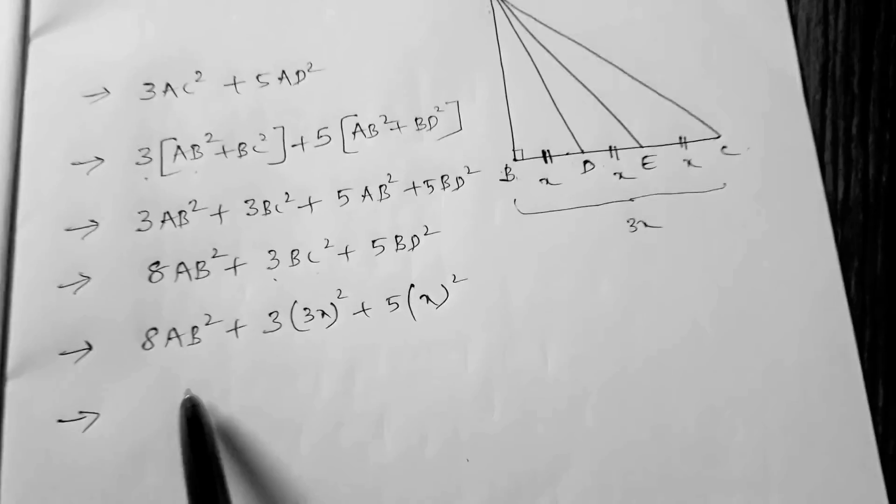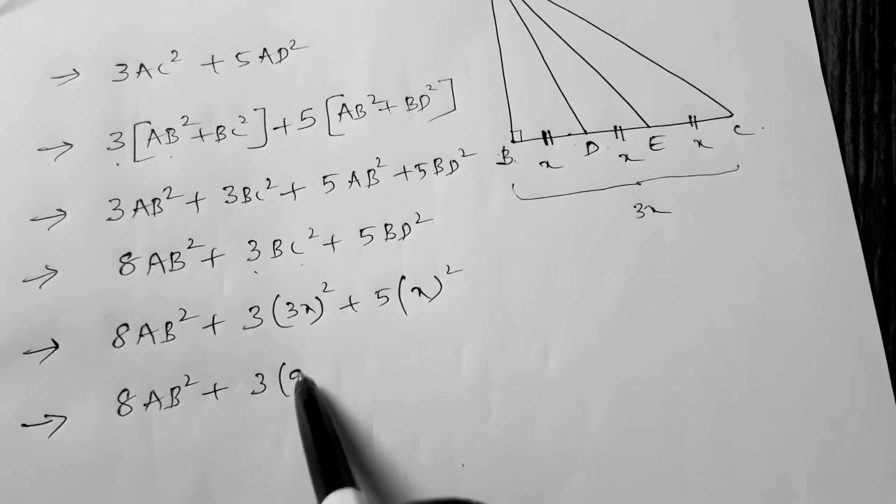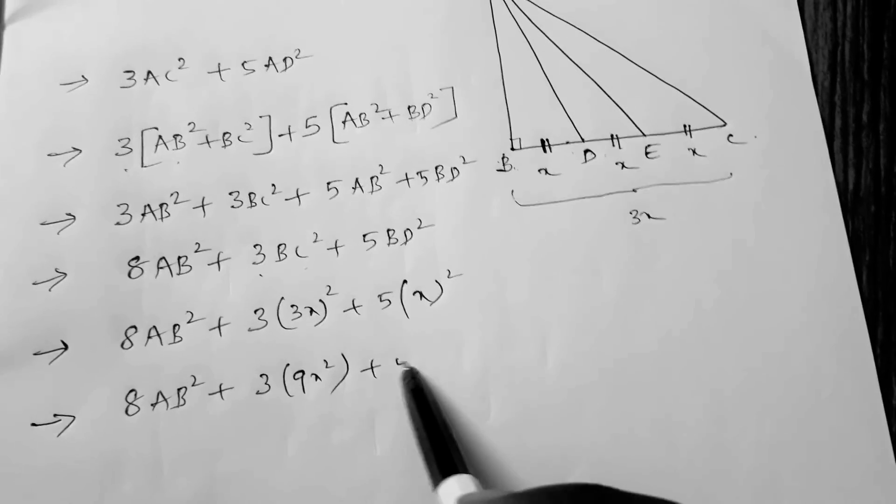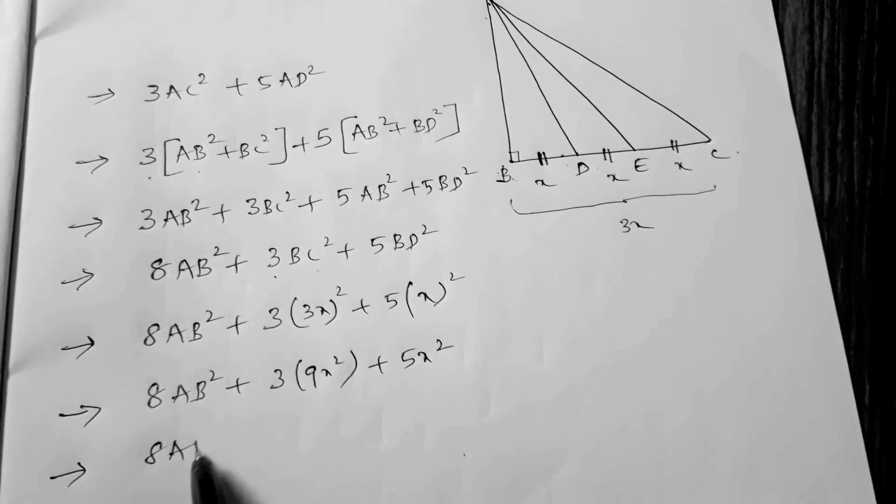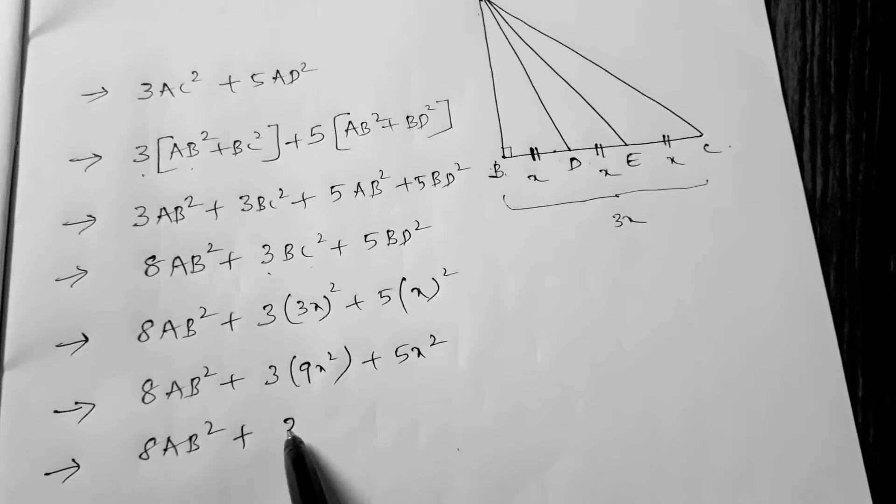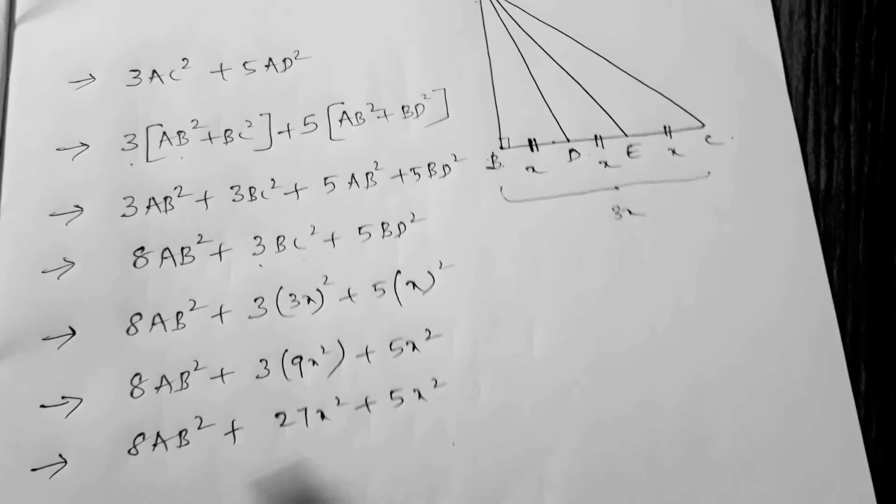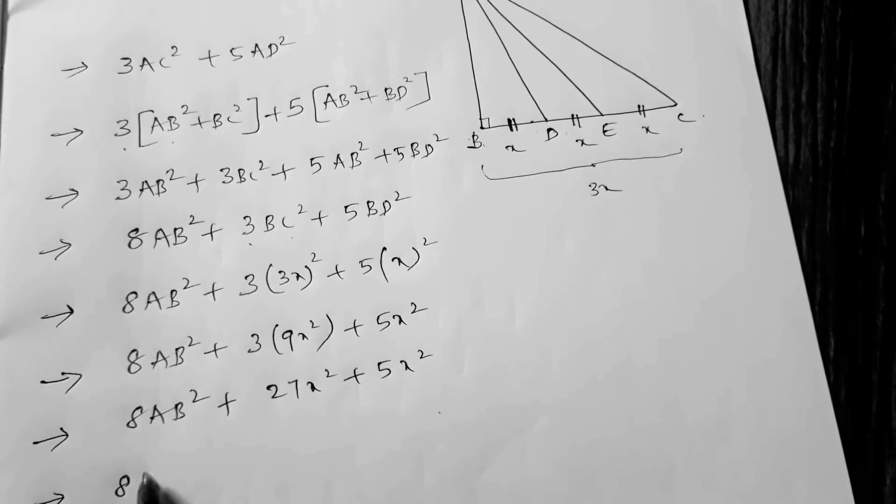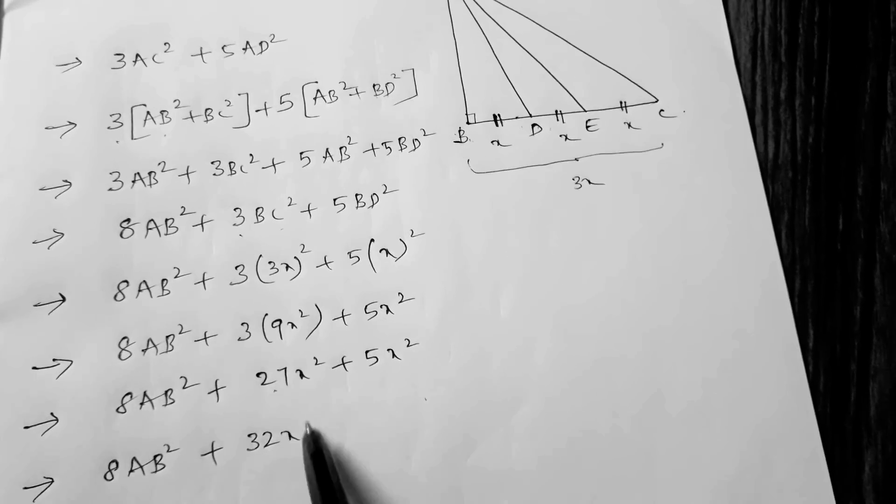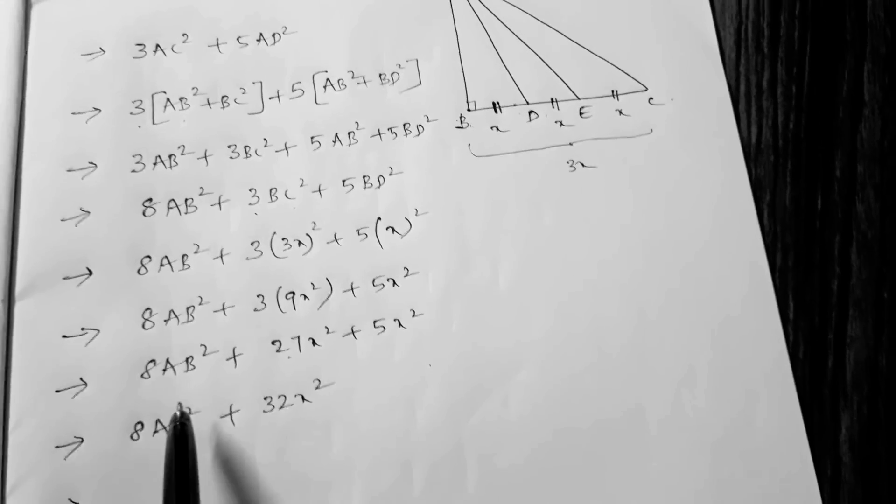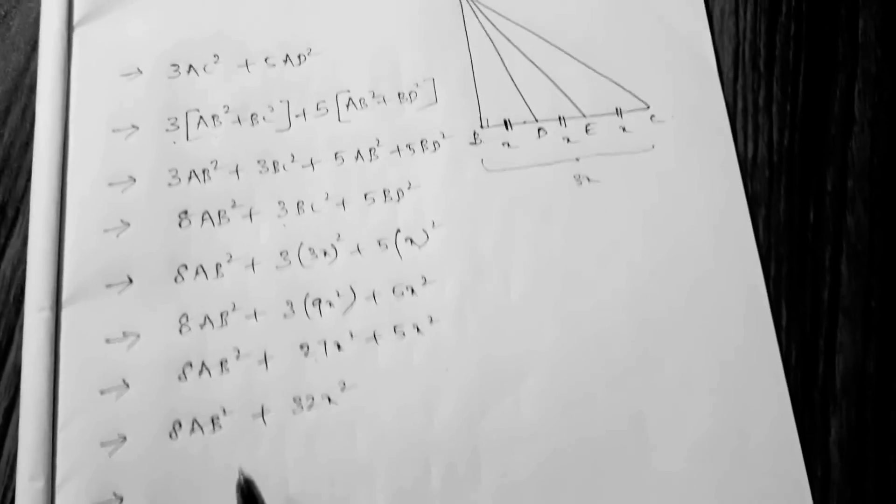If you solve further, 8AB² plus 3 times 9X² plus 5X². So here, 8AB² plus 27 plus 5, which is 32X². We need 8AE², so here I write as 8AB².